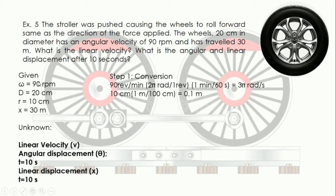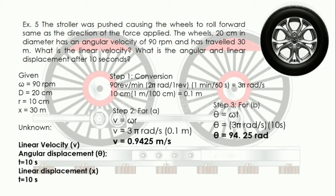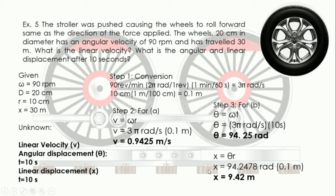First, we convert 90 rpm since it is used instead of rad per second. For part A, linear velocity equals angular velocity times its radius; plugging in the values gives 0.9425 meters per second. For part B, the angular displacement is found to be 94.25 radians. Using that result to find linear displacement gives 9.42 meters. So at 10 seconds, the stroller traveled 9.42 meters.